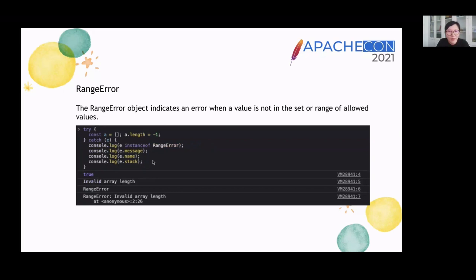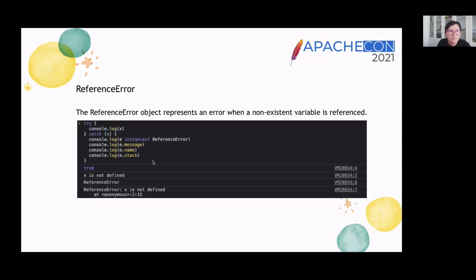RangeError: the RangeError object indicates an error when a value is not in the set or range of allowed values. The example handles RangeError using the try-catch construct — for instance, when an array's length should be greater than or equal to zero. ReferenceError: the ReferenceError object represents an error when a non-existent variable is referenced, for example when variable X is not defined.